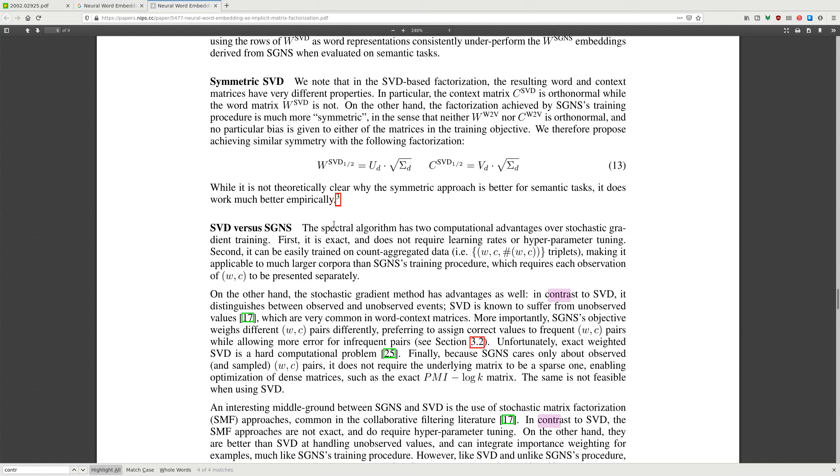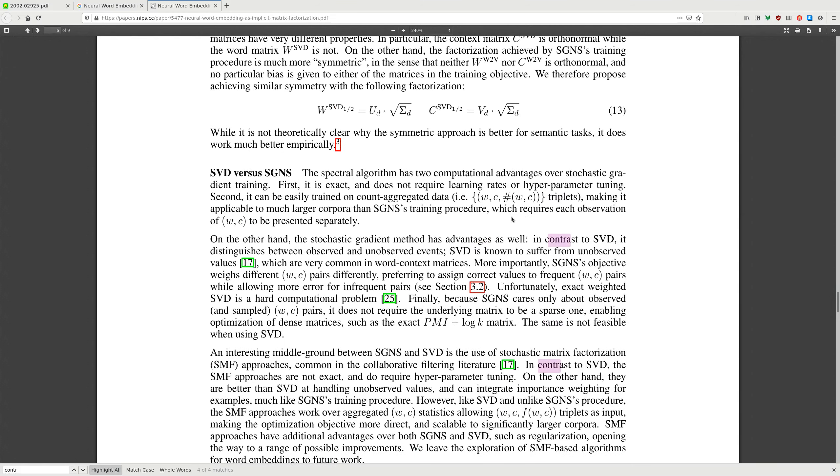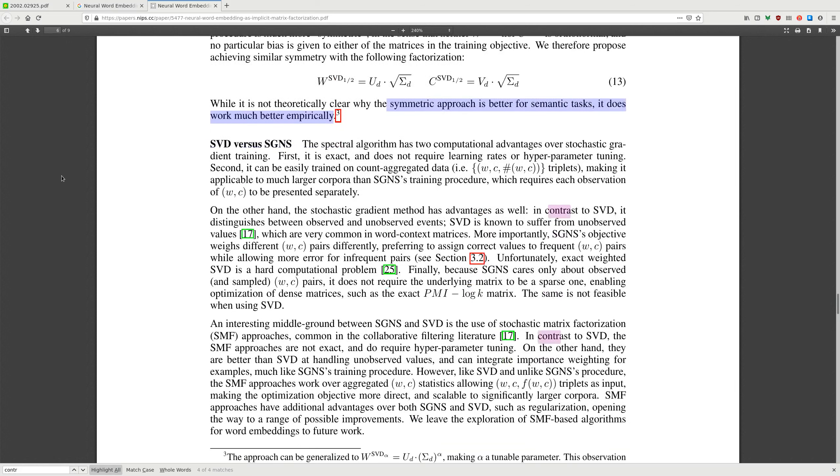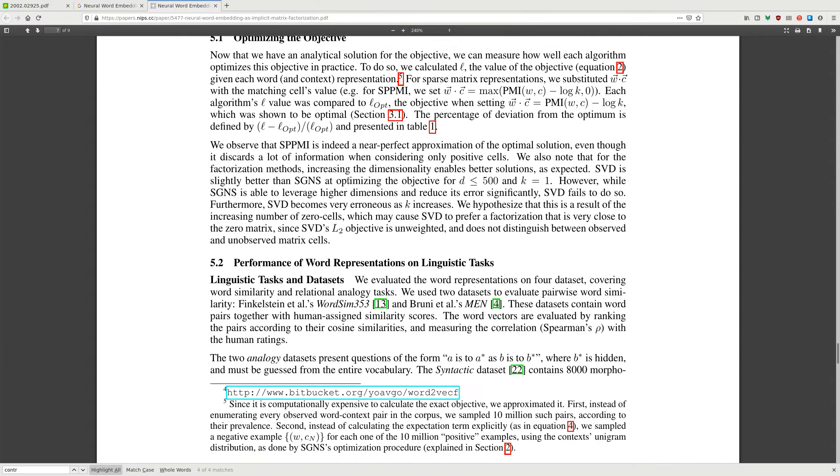Symmetric SVD. We know that the SVD-based factorization creates word and context matrices that have very different properties. In particular, the context matrix is orthonormal while the word matrix is not. Therefore, we propose achieving symmetry with a different factorization. They use both of the factorized matrices and multiply them by the square root of the singular value matrix. The symmetric approach is better for semantic tasks. It does work much better empirically.